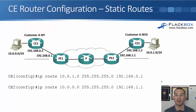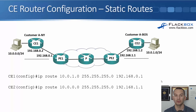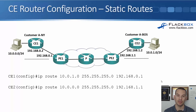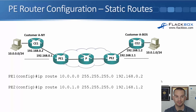For static routing configuration on CE1, we configure: ip route 10.0.1.0 255.255.255.0 with the next hop address of PE1 at 192.168.0.1. On CE2, we configure: ip route 10.0.0.0 255.255.255.0 with the next hop address of 192.168.1.1 on PE2.